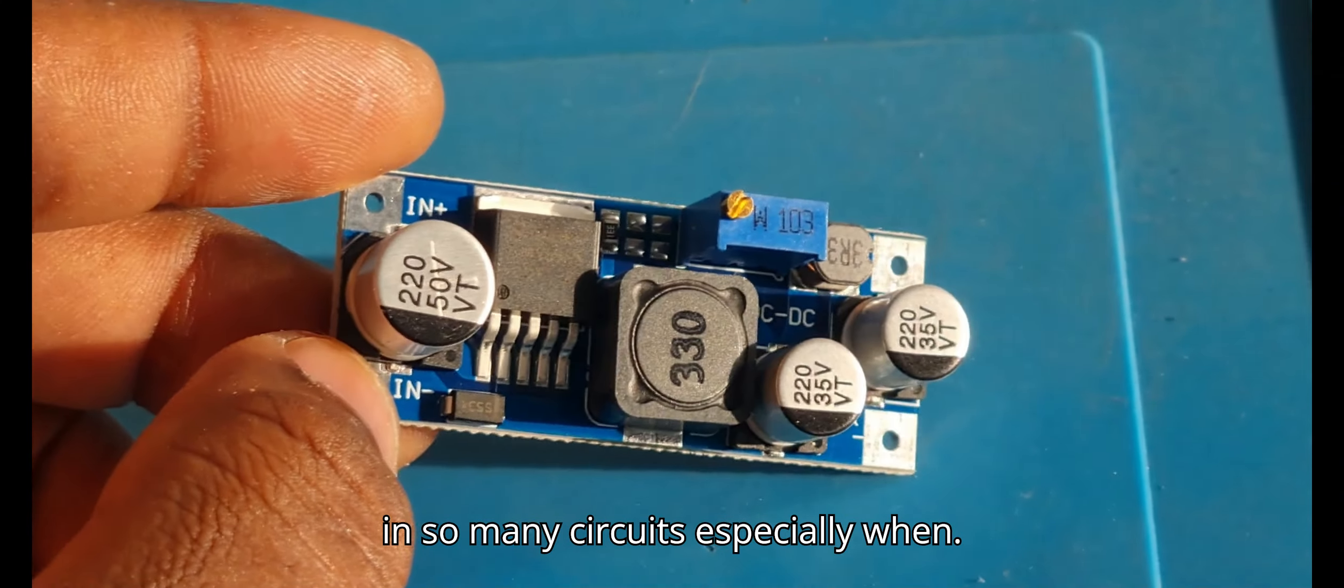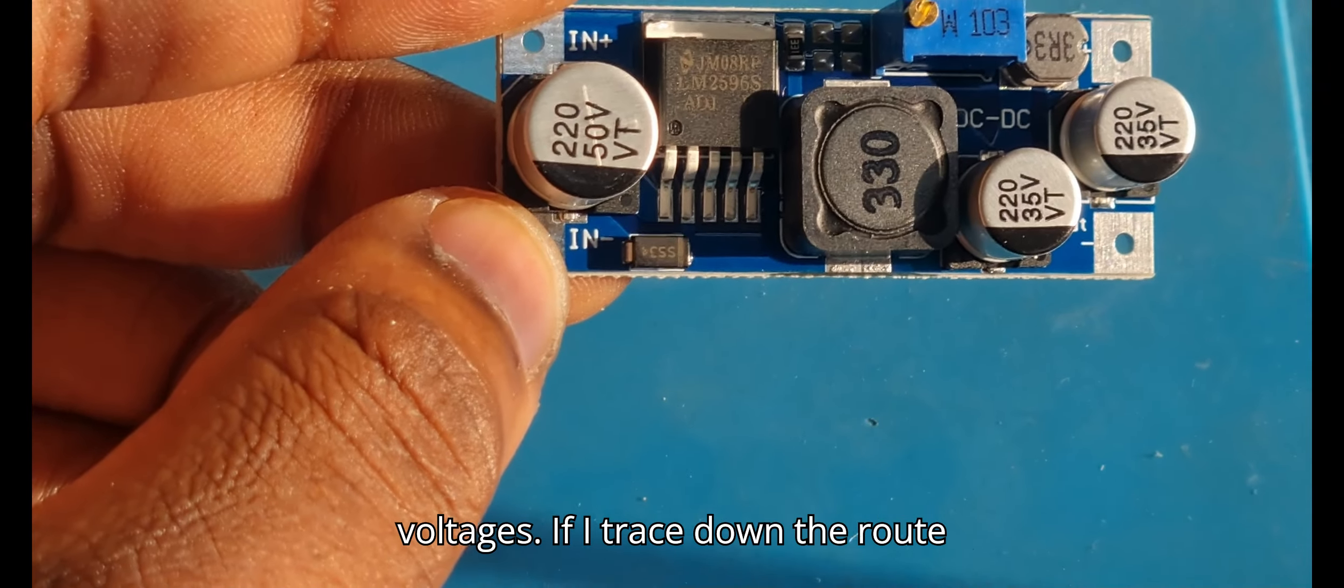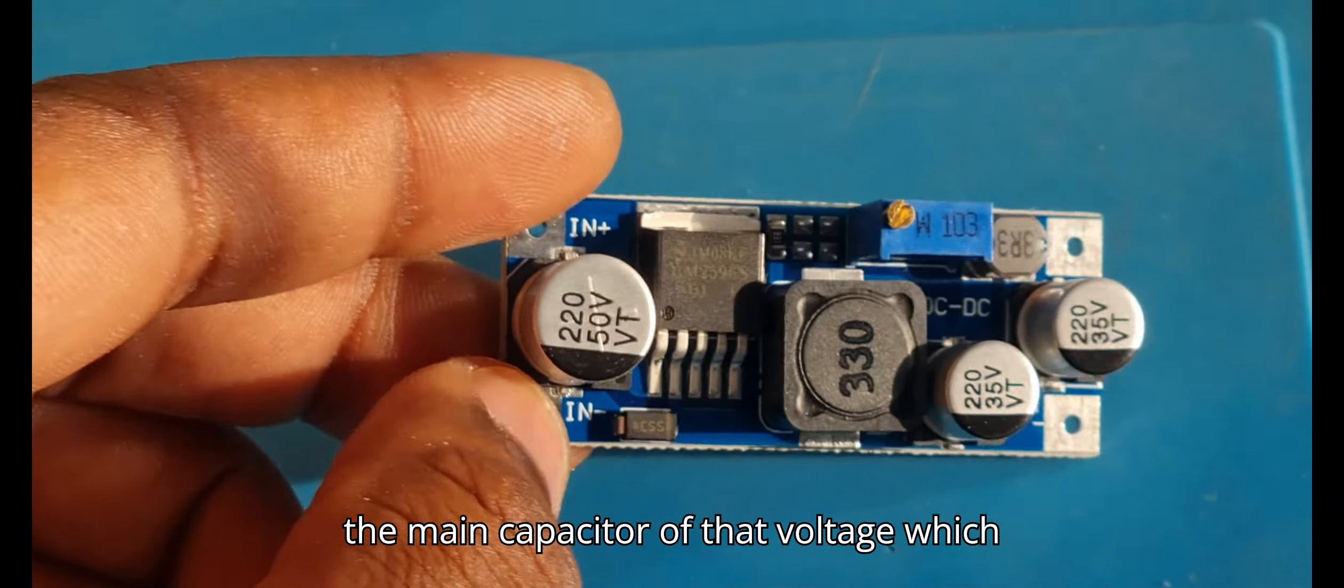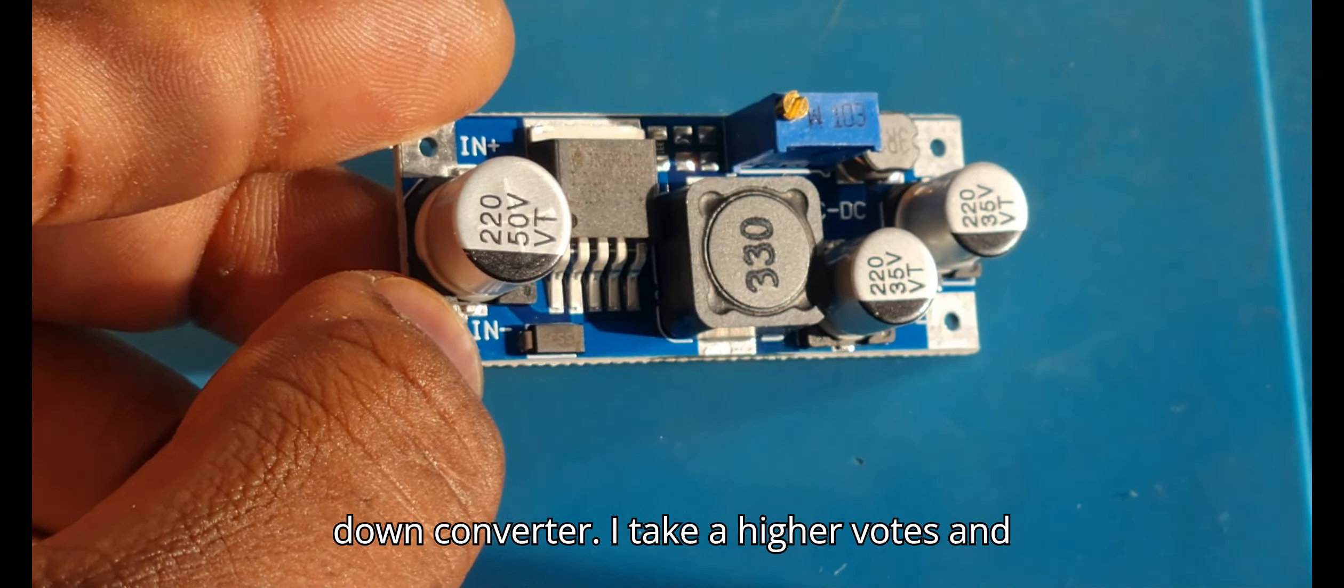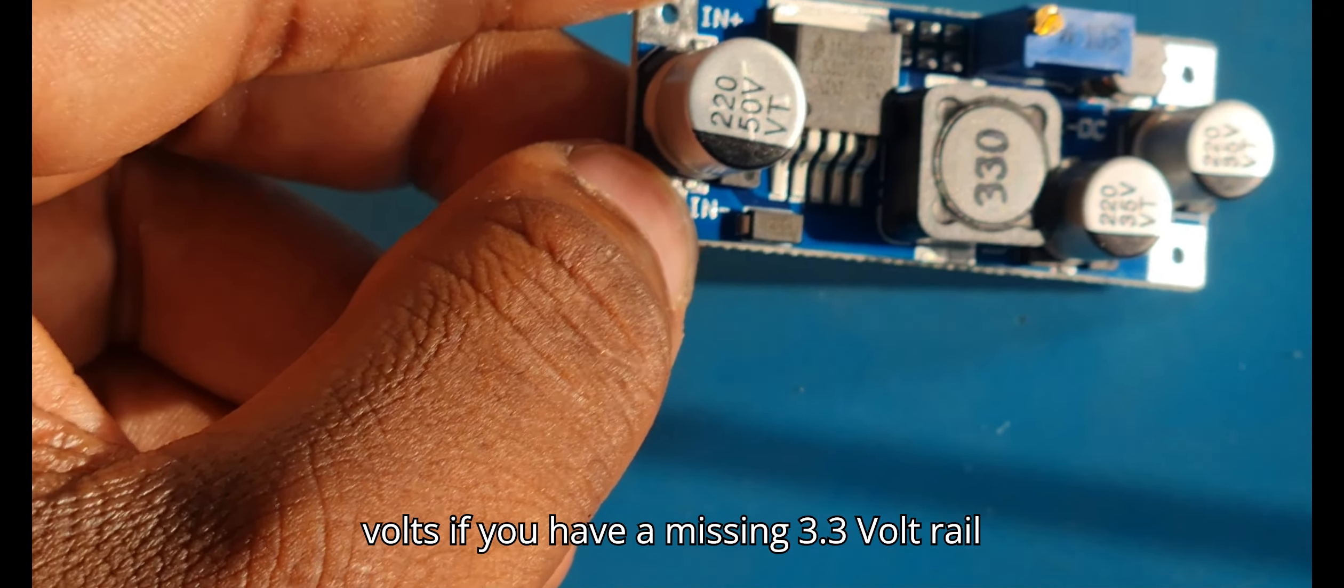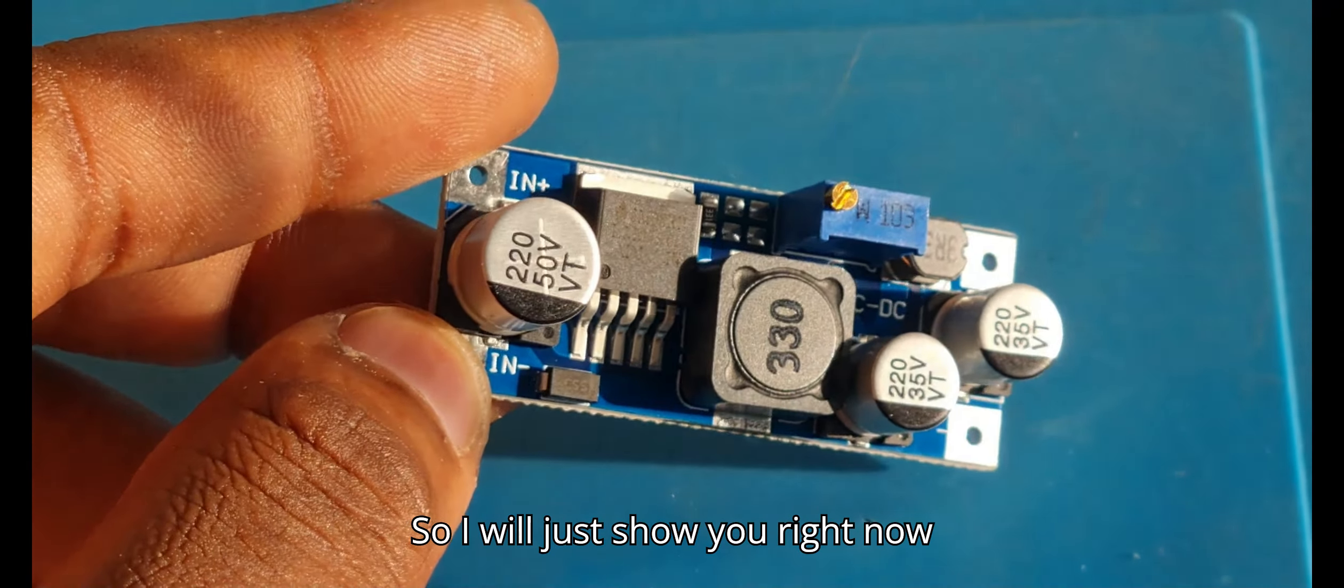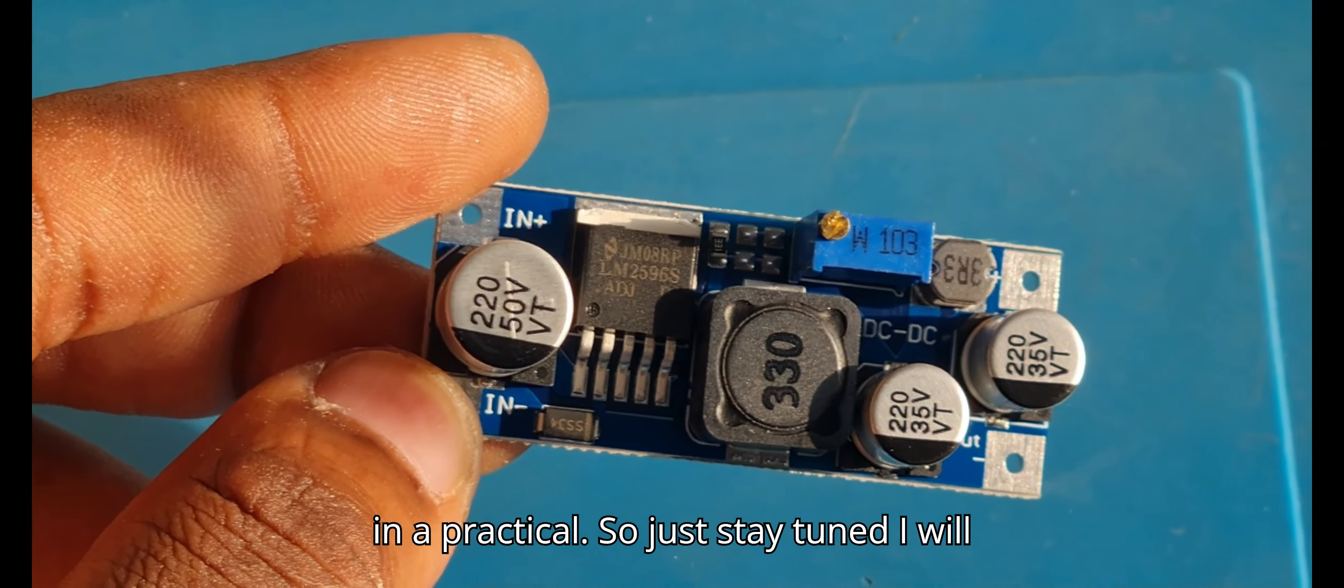What a step down does is it helps you in so many circuits, especially when I'm working with TVs and I have missing voltages. If I trace down to the main capacitor of that voltage which is missing, I can use this step down converter. I take a higher voltage and step it down, especially like 3.3 volts if you have a missing 3.3 volt rail or missing 5 volt rail.